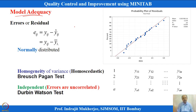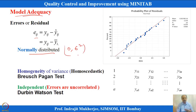The assumptions are: errors follow a normal distribution with mean 0 and standard deviation sigma-squared. Sigma-squared can be estimated as the mean square error. The normality assumption of the residuals must be verified.